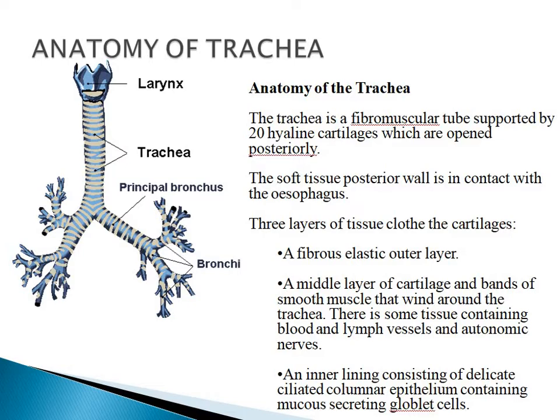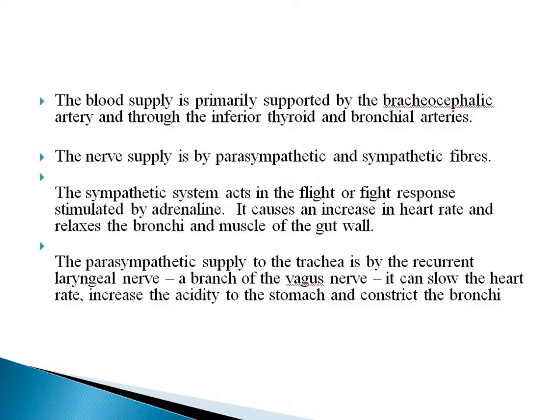Here you can see the larynx and the trachea, with cartilages visible, further dividing into the right and left principal bronchi. The blood supply is primarily supported by the brachiocephalic artery and through the inferior thyroid and bronchial arteries. The nerve supply is by parasympathetic and sympathetic fibers.